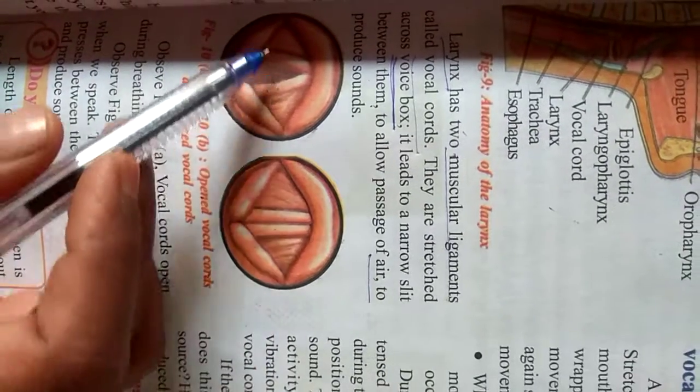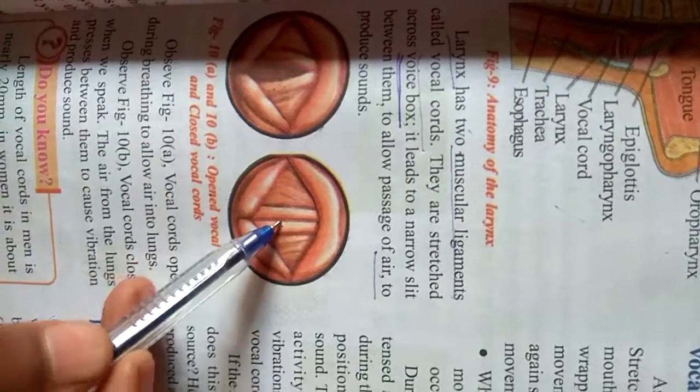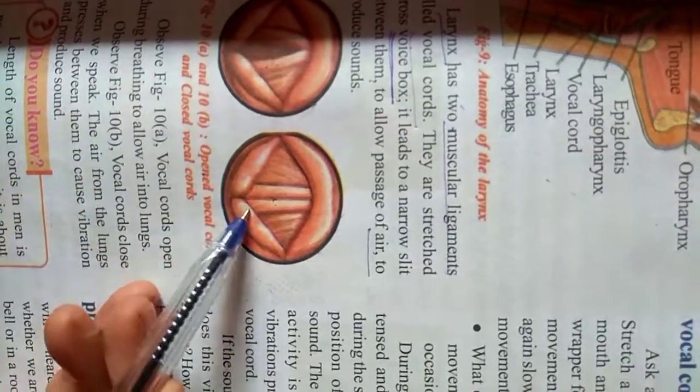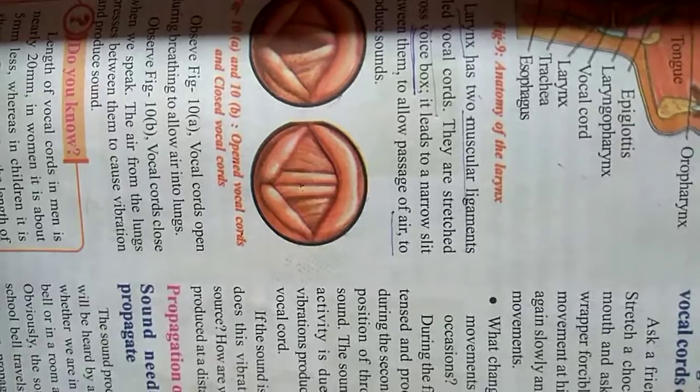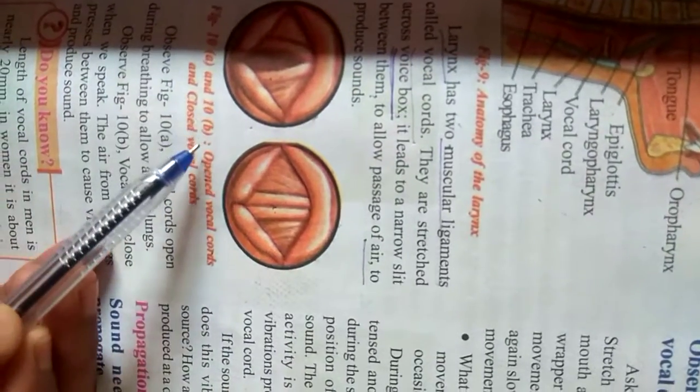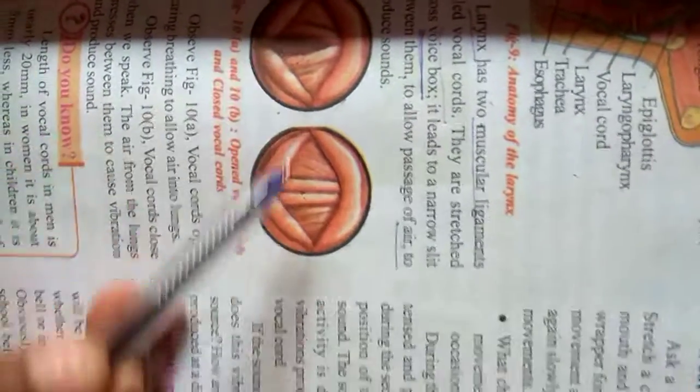Opened vocal cords. This is open vocal cords. This is closed vocal cords. So these two diagrams you draw for today's assignment. Figure 10A and 10B, both open vocal cords and closed vocal cords.